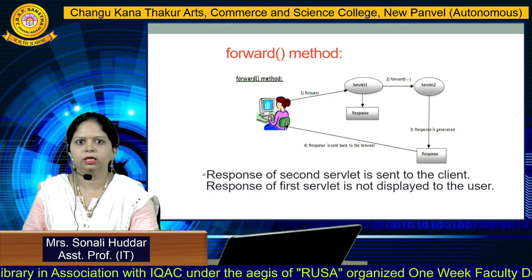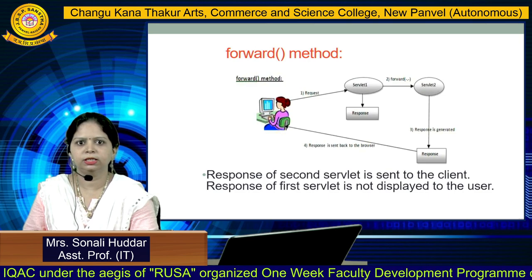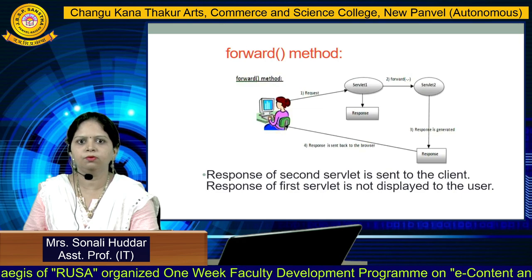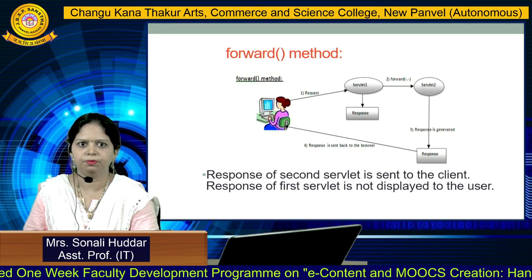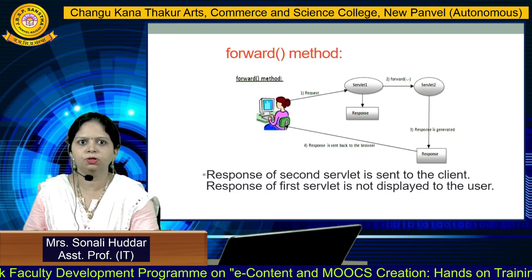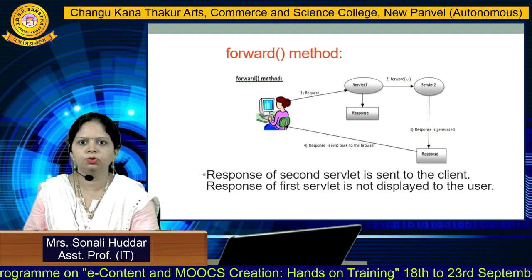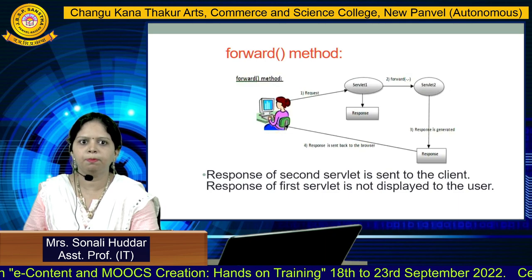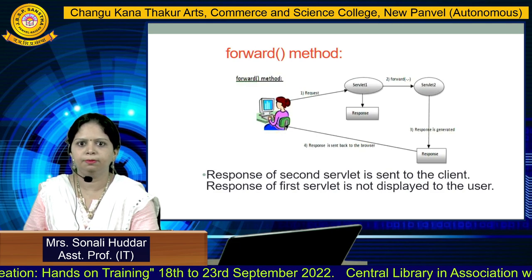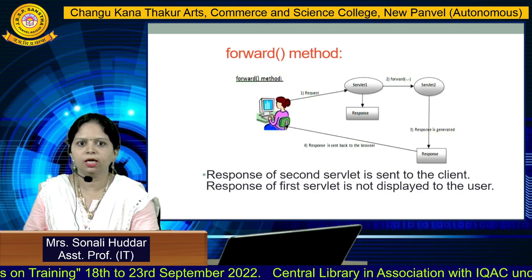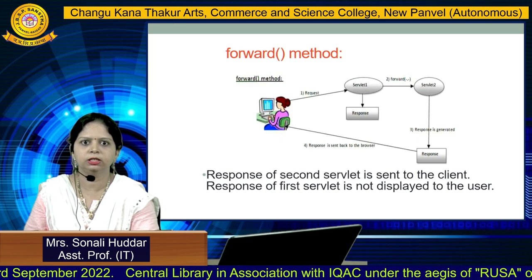Consider a client who sends one request. There are two servlets: Servlet 1 and Servlet 2. When the request is sent to the server, it goes to Servlet 1. Servlet 1 generates a response, but that response is not sent to the client — instead, the request is forwarded to Servlet 2. Servlet 2 prepares its response and sends it back to the client. So only the response of Servlet 2 is displayed to the user; the response of Servlet 1 is not shown.